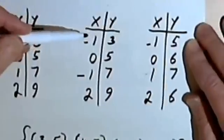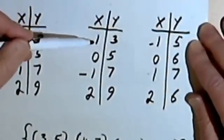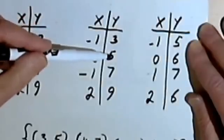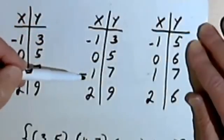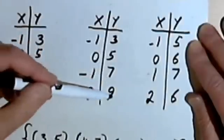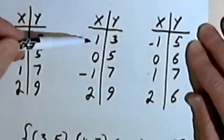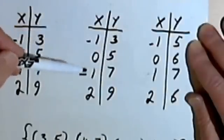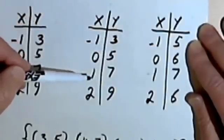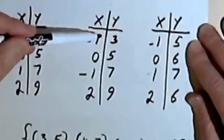But let's look at a different table. Here I've got input is negative 1, output is 3. Input is 0, output is 5. Input is negative 1, and output is 7. And then input is 2 and output is 9. But look at the ones where I've got an input of negative 1 — sometimes it tells me the output is 3, sometimes it tells me the output is 7. So this table does not represent a function.